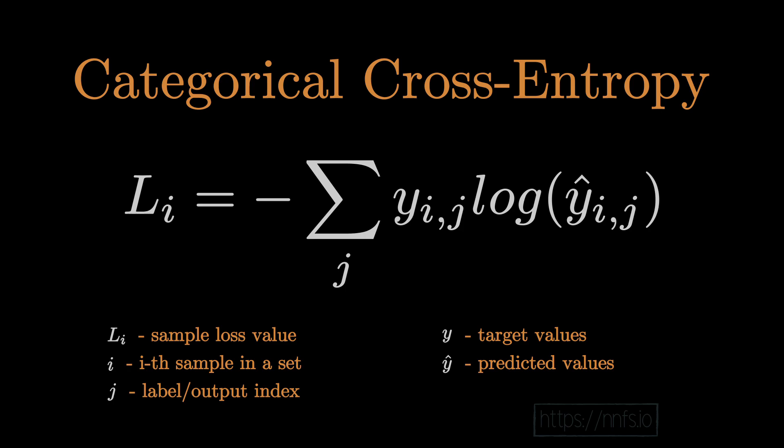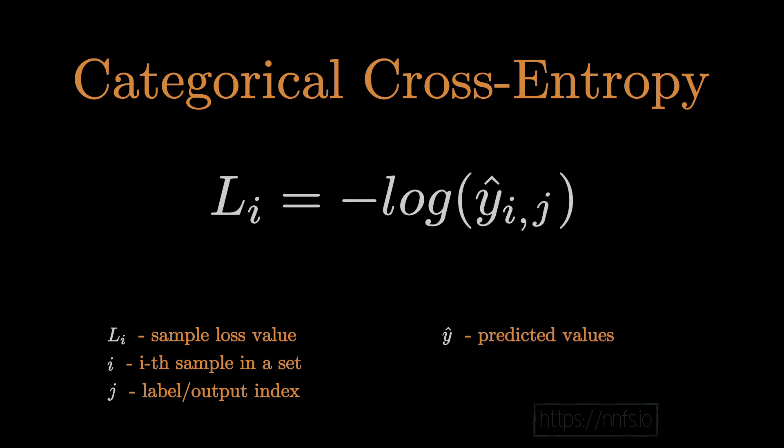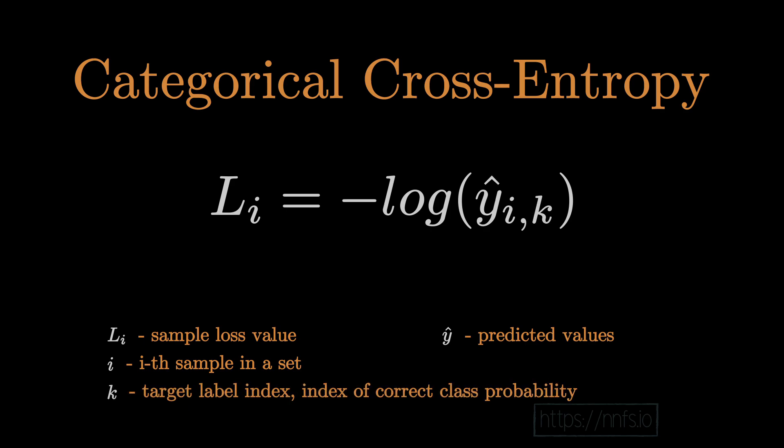The formula takes the negative sum of the target value multiplied by the log of the predicted value, for each value in the distribution. This formula simplifies quite a bit to just being the negative log of the target class's predicted value, because of one-hot encoding. There are many ways to calculate loss, and more challenging problems may use a custom loss function entirely. In classification, categorical cross entropy is popular because it works, and it becomes very convenient in the back propagation and optimization steps.